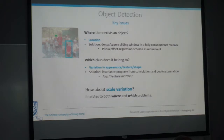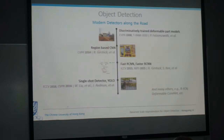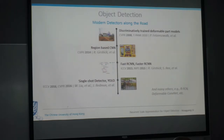How about scale variation? There are a few popular modern detectors. The first, and almost the most important work before the deep learning era, is the discriminative trained deformable parts model, briefly DPM, published around six years ago.